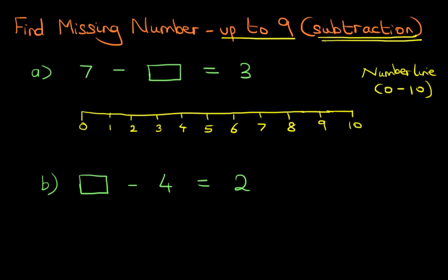Now, let's have a look at the question again. We've got 7 minus something equals 3. So, we're going to start with number 7. That's our starting point. Find number 7 on the number line, and here it is.